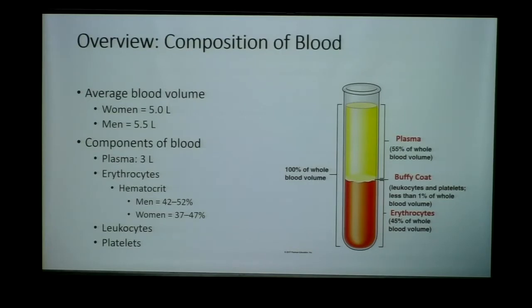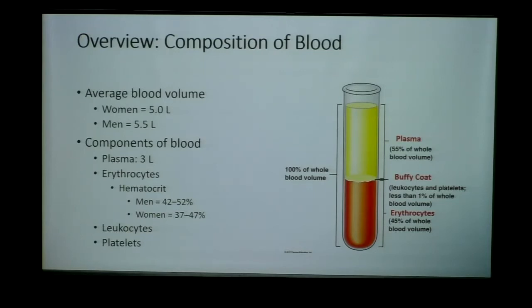Less than one percent will be what we call the buffy coat. This is leukocytes, which are our white blood cells important in immune function, as well as non-cellular fragments called platelets involved in blood clotting. The most dense part of blood falls to the bottom — those are the red blood cells, or erythrocytes — and that forms about 45 percent of our total blood volume. From centrifuging we can deduce the hematocrit, which is the fraction of erythrocytes to total blood volume, about 42 to 52 percent for men and 37 to 47 percent for women.